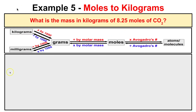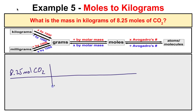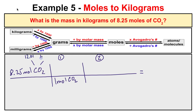In this last example it says: what is the mass in kilograms of 8.25 moles of carbon dioxide? We want to know the mass in kilograms. First we convert moles to grams, and then we convert grams to kilograms for our final answer. The molar mass of carbon is 12.01 and oxygen is 16.00, so we take 2 times 16 which is 32 and add 12.01, giving a grand total of 44.01 grams of carbon dioxide per mole.